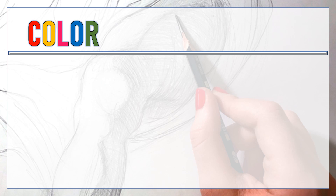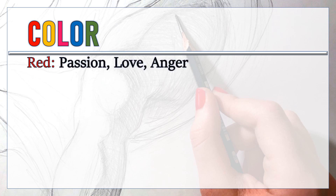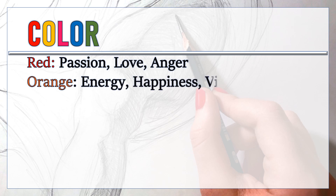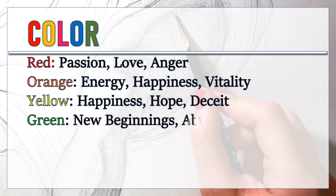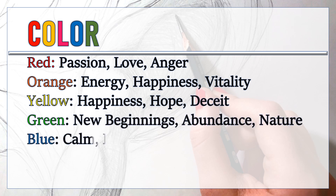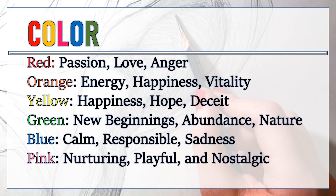Did you know that each color represents a different meaning in art? Red: passion, love, anger. Orange: energy, happiness, vitality. Yellow: happiness, hope, deceit. Green: new beginnings, abundance, nature. Blue: calm, responsible, sadness. Pink: nurturing, playful, and nostalgic.